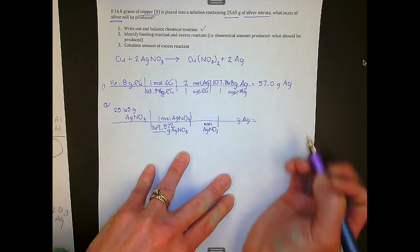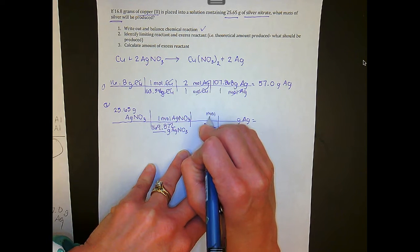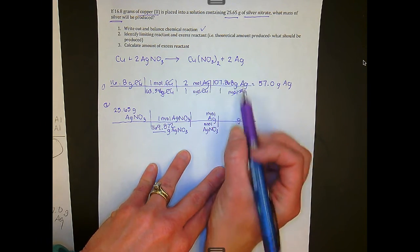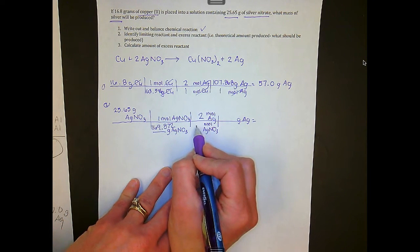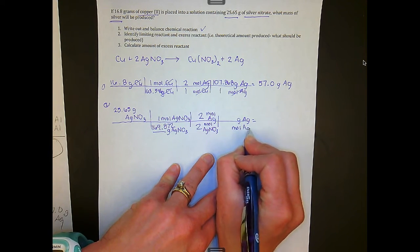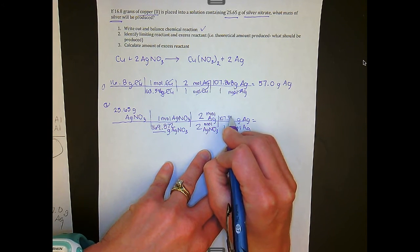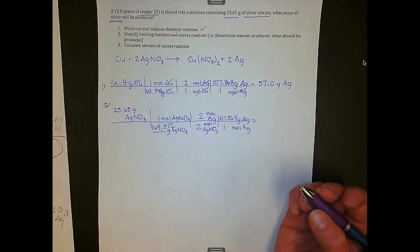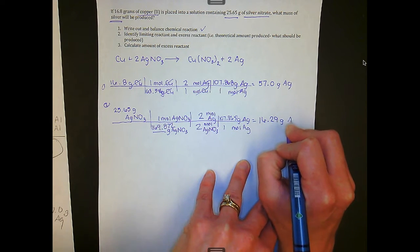Here we are at the transition step — we're going from silver nitrate over to silver using a mole ratio. Moles of silver goes up top. Looking at the coefficients: there's a coefficient of 2 in front of silver and a coefficient of 2 in front of silver nitrate. Then we drop moles of silver down. One mole of silver represents 107.868 grams. When you multiply straight across and divide, you end up getting 16.29 grams of silver.